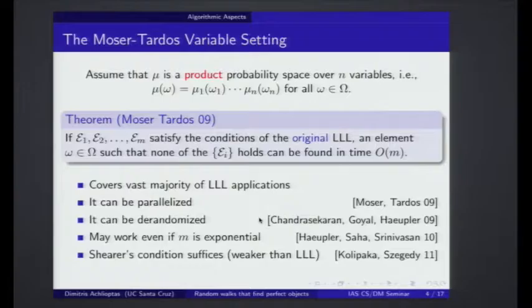Although there are exponentially many bad things, if they are nicely structured, you will go down to zero bad things happening in a polynomial amount of time. The intuition is somewhat analogous to the case where you have a system specified by an exponential number of constraints, but if you have a separation oracle, then you can actually get down to satisfying everything in polynomial time.